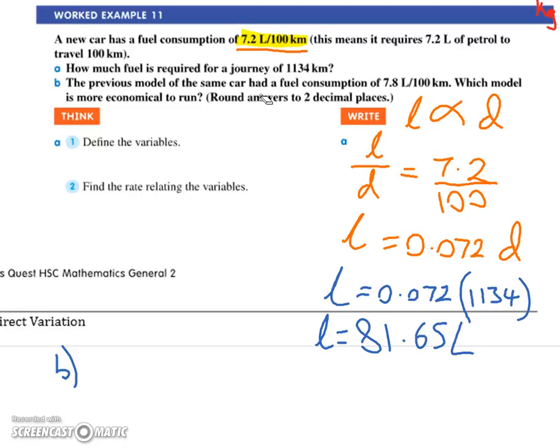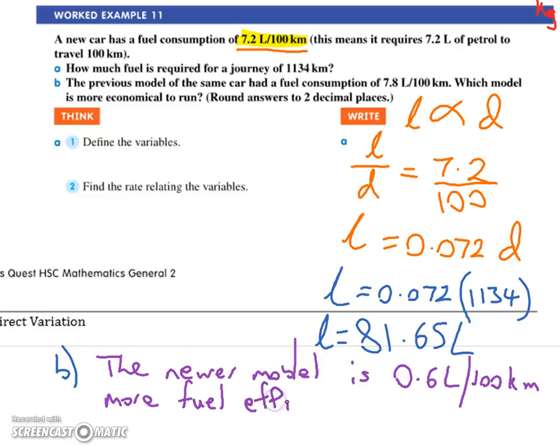That 'round answers to two decimal places' actually should be on the line down here, so it relates to the whole question. Because at the moment it looks as though it relates to just part B. But you'll notice I did mine to two decimal places. The newer model is 0.6 liters per 100 kilometers more fuel efficient. Does that make sense? Happy with that?